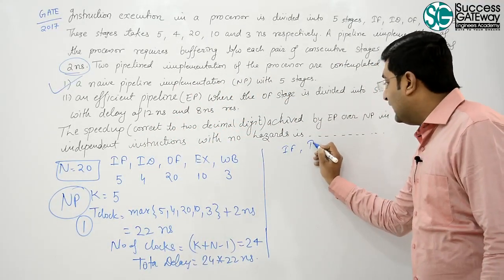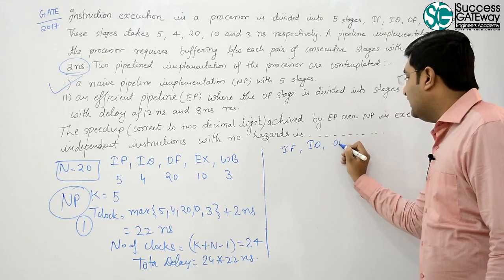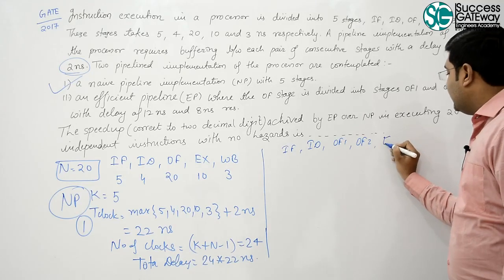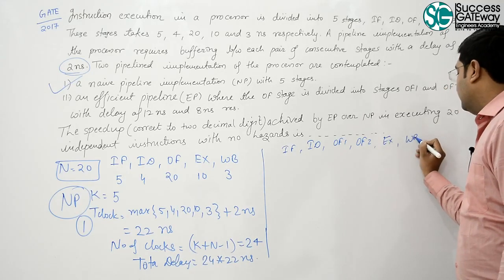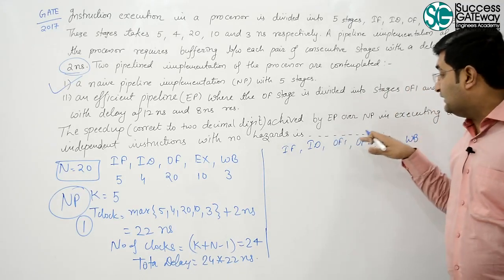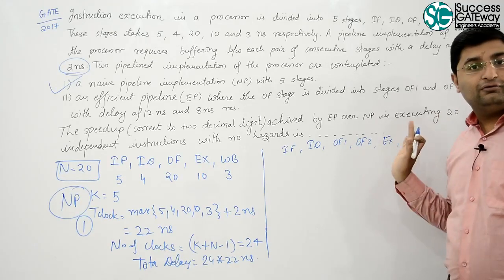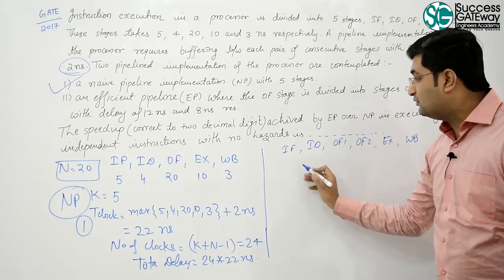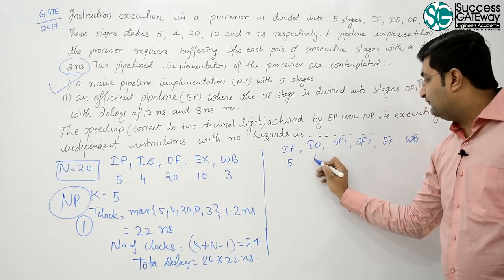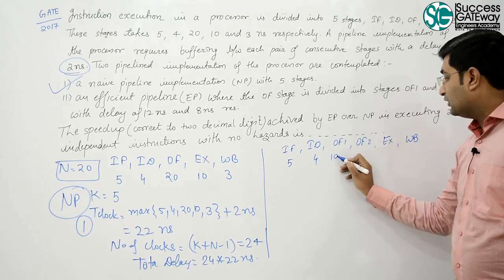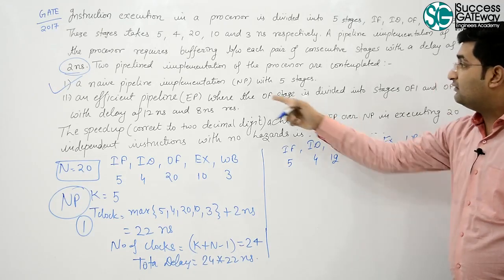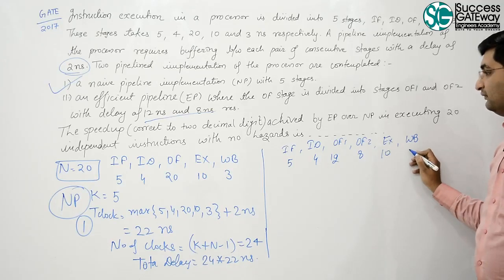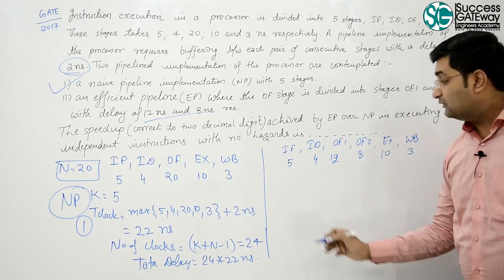Now what we did? IF, ID, OF1, OF2, EX and WB. Now that OF is divided into 2 stages, so number of stages increased. Delay is 5, 4, 12, 8, that is given in the question itself. Now, 10 and 3.